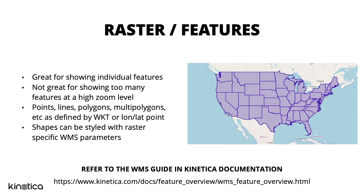The feature renderer in Kinetica is great for showing individual features. If you're looking at a ton of data at a very high zoom level, it's probably not a good idea to use the feature renderer — the heat map is more useful for that scenario. But if you're zoomed really far and looking at individual points, the feature renderer is great for shapes as well: lines, polygons, multi-polygons — any kind of complex shapes you want to actually draw.